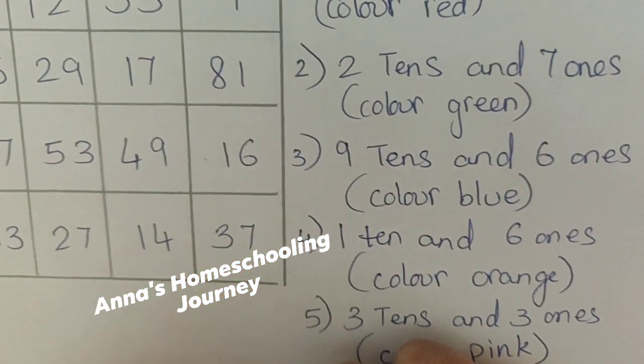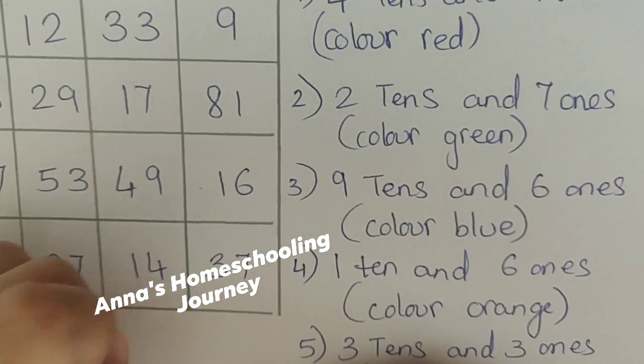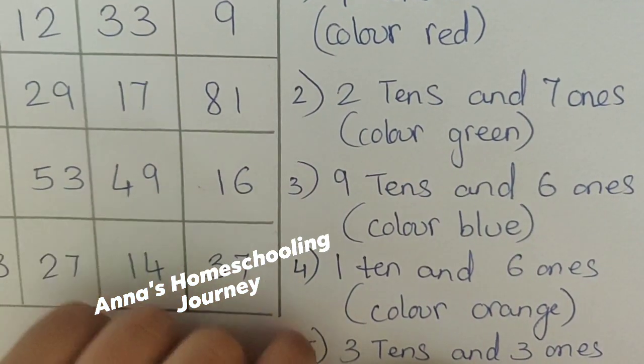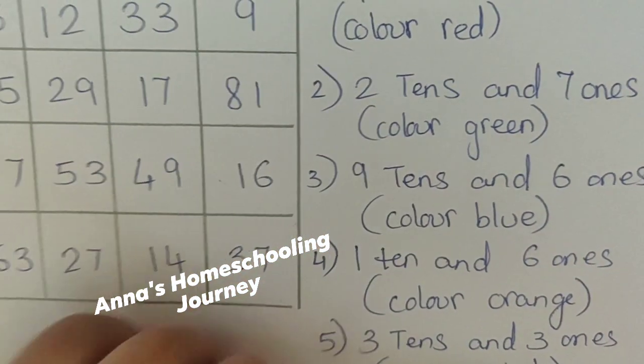So, now we will see which color. Color is blue. No. We are doing the fourth one, right? 1 ten and 6 ones is the fourth one. Which is the color? It is the color orange. Very good.